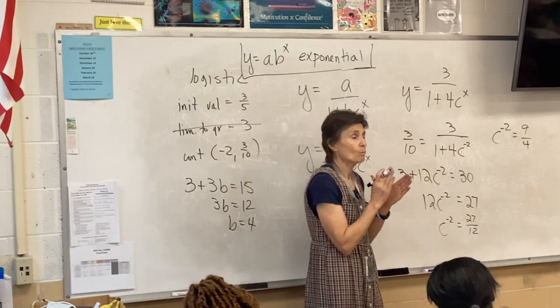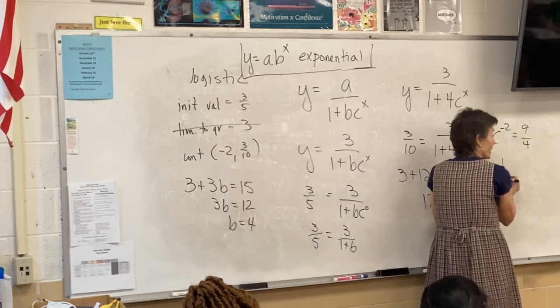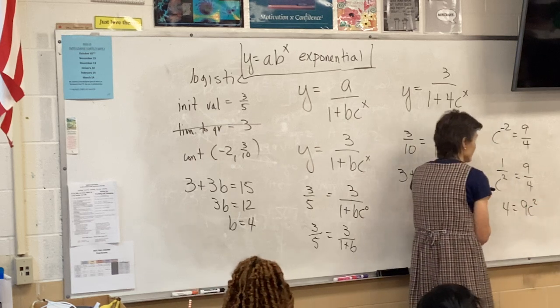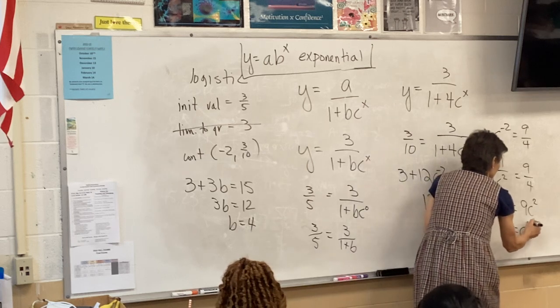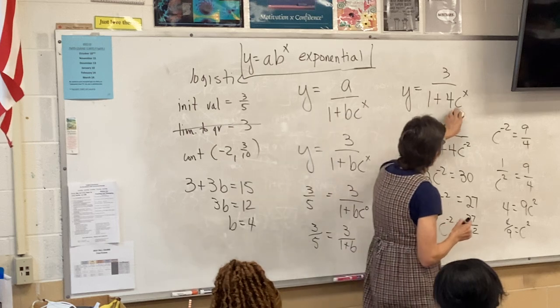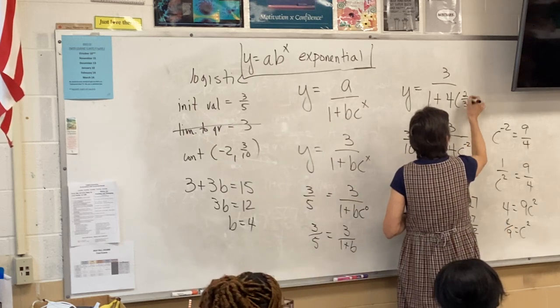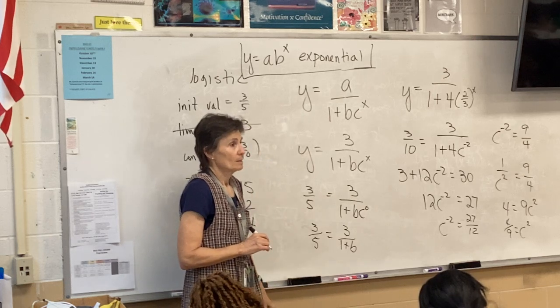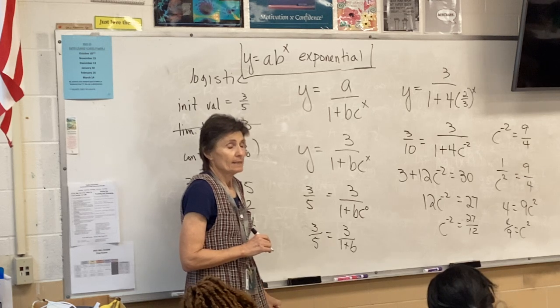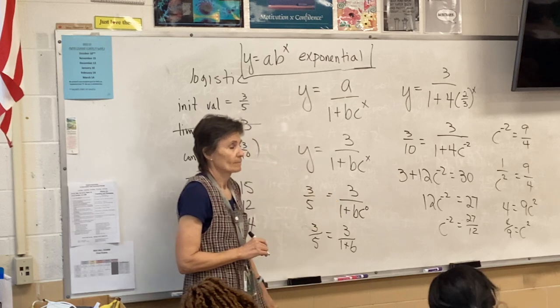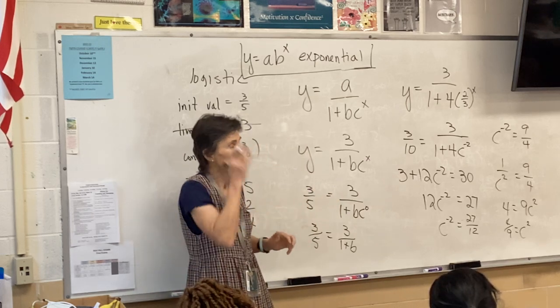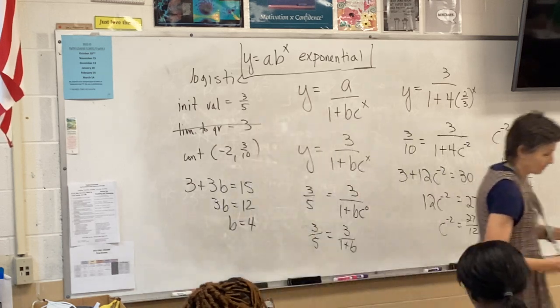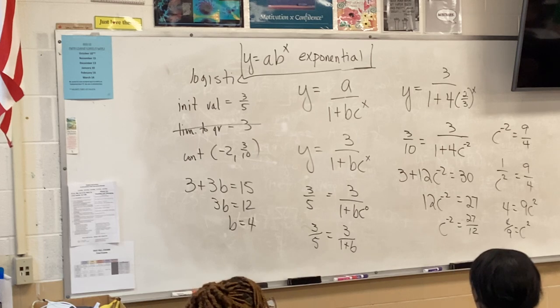So, now what? Plug in the other point. I take this other random point. So, 3 tenths equals 3 over 1 plus 4 C to the negative second. Cross multiply again. Distribute here. So, 3 plus 12 C to the negative second equals 30. Subtract 3. So, C to the negative second equals 9 fourths. Let's cross multiply one more time. So, 4 equals 9 C squared. 4 ninths equals C squared. So, my C is 2 thirds.